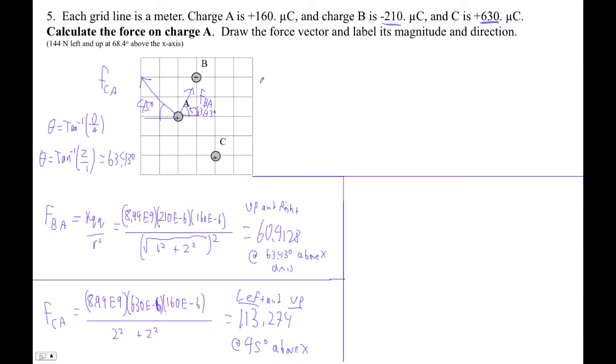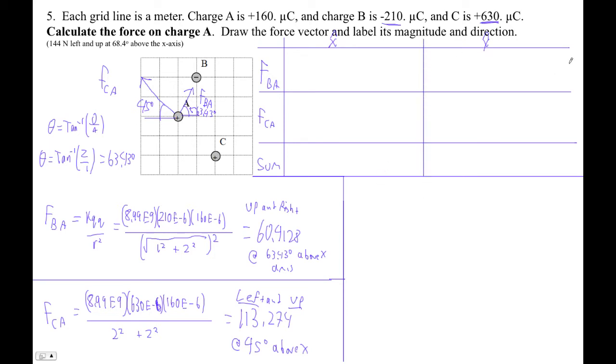So let's break this guy into components. We've got FBA, we've got FCA, we've got the sum. So let's make little tables. And then we'll do the x component here, and the y component here. This makes me so happy.